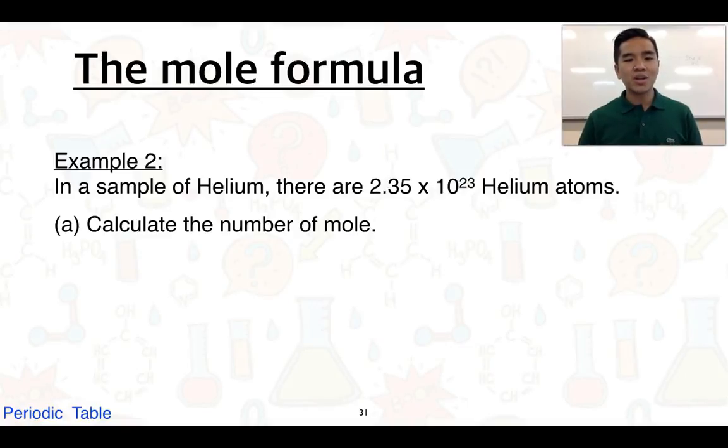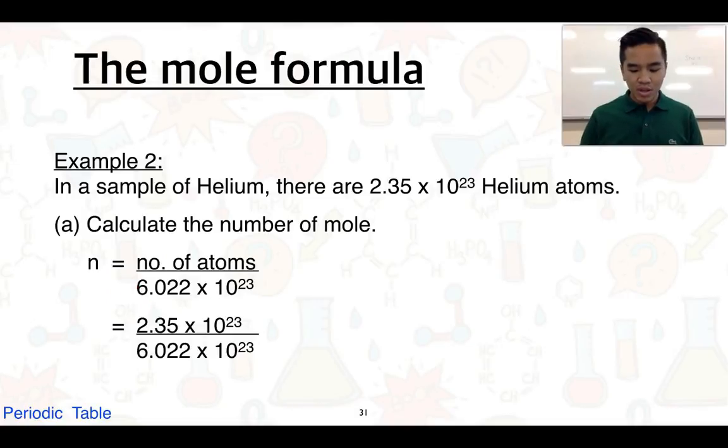Our second example: we have 2.35 × 10²³ helium atoms. The first part asks us to calculate the number of moles of helium atoms. Given the number of particles, the number of moles equals the number of atoms divided by the amount present in one mole: 2.35 × 10²³ divided by Avogadro's constant. Our answer gives us 0.039 moles.